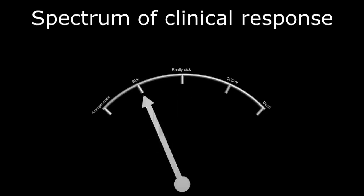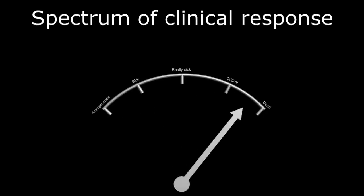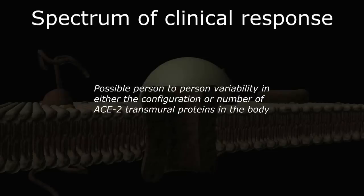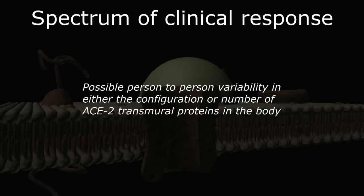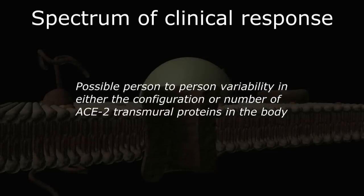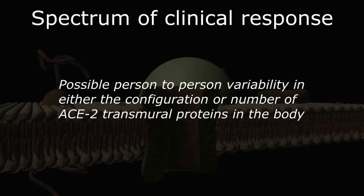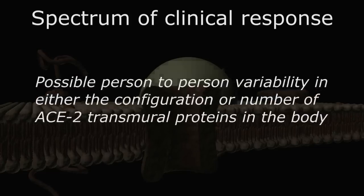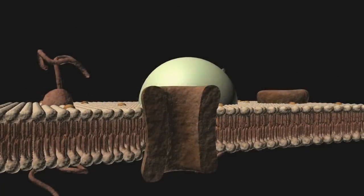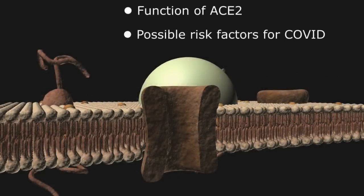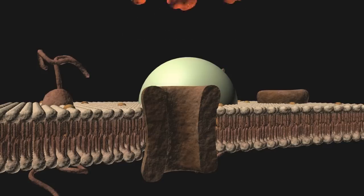However, the clinical response spectrum to SARS-CoV-2 is quite broad, ranging from completely asymptomatic to death, suggesting variability in either the configuration or number of ACE2 targets from individual to individual. Over the next few minutes, we're going to look at the actual function of the ACE2 metalloprotein in our bodies and explore some of the clinical situations that may make the protein a more suitable target for COVID.